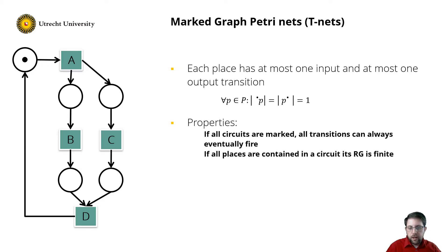The second property is that if all places are contained in a circuit, the reachability graph is finite. So in this case, all places are covered by at least one circuit, and hence the reachability graph is finite.